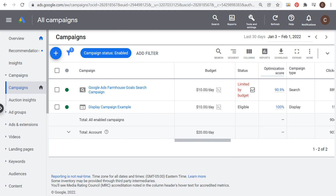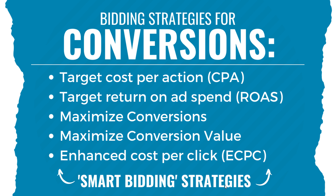Let's start with some of the different smart bidding strategies. These are bidding strategies that optimize for conversions. The top four are the most popular ones you're going to use most often. Those are target cost per action, also referred to as target CPA; target return on ad spend, also referred to as target ROAS; maximize conversions; maximize conversion value; and enhanced cost per click.